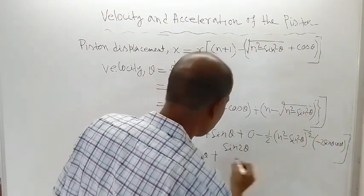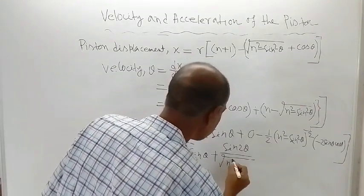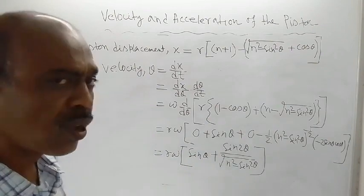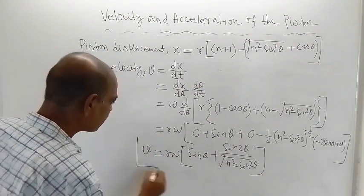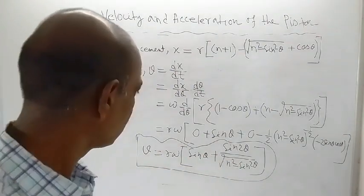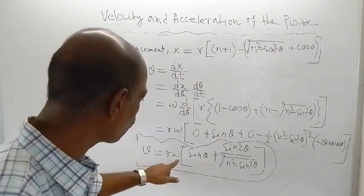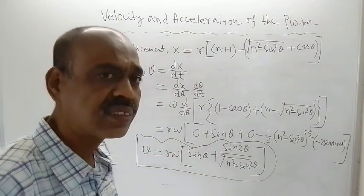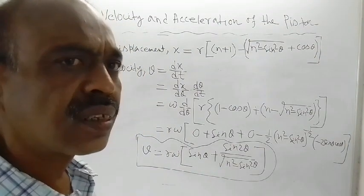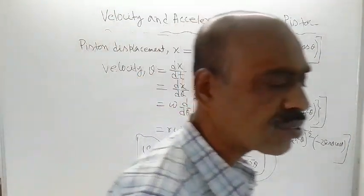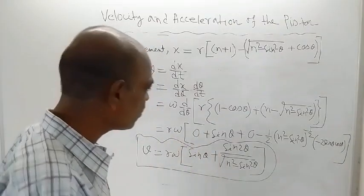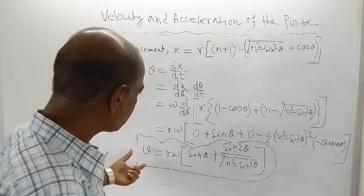This gives us R·ω·[sinθ + sin2θ / (2√(n² - sin²θ))]. This is the full expression for velocity of the piston. Note that V is not a constant — R and ω are constants, but θ changes continuously. You should think about whether θ varies from 0 to 180 degrees or 0 to 360 degrees and answer that question.